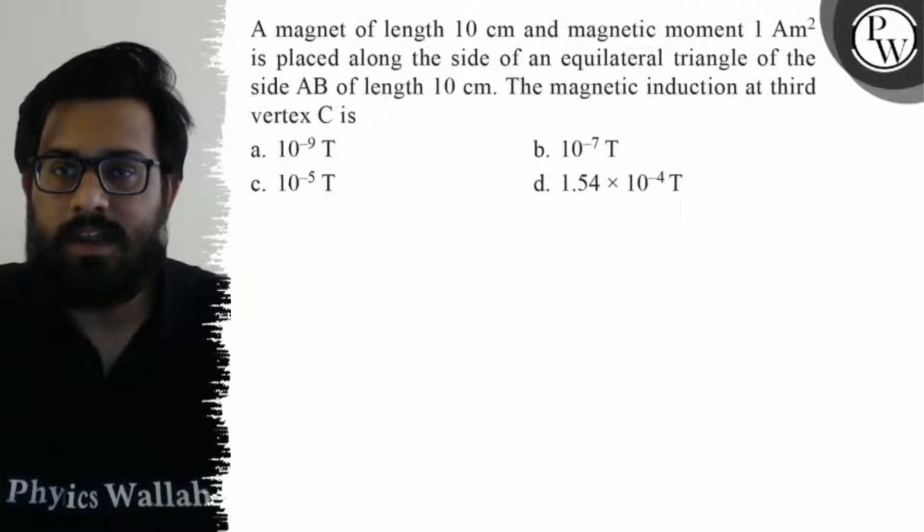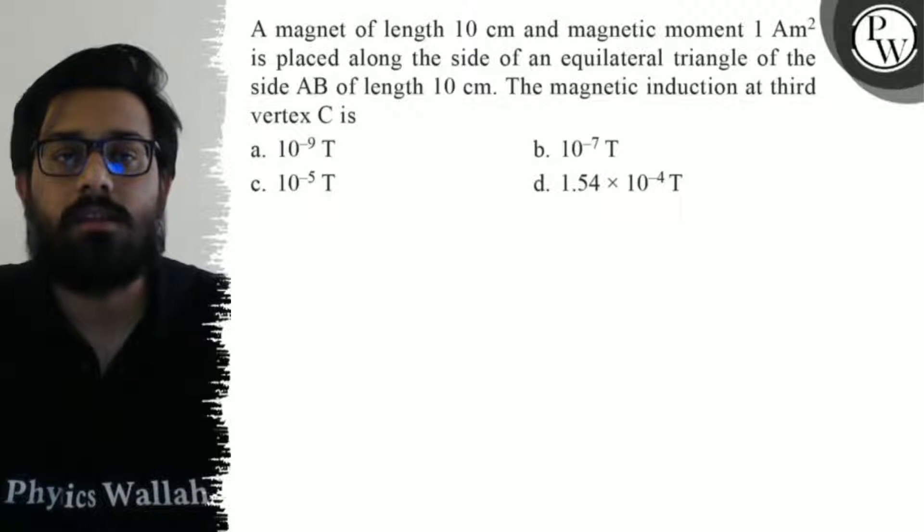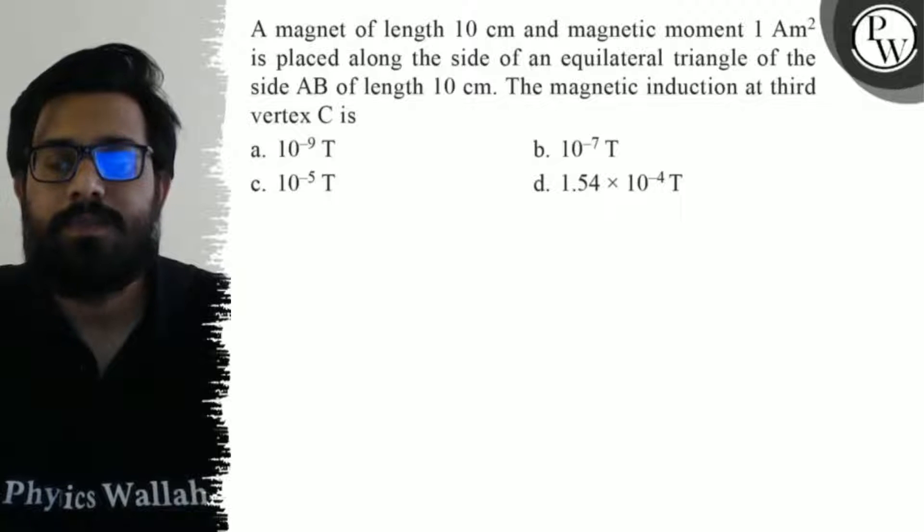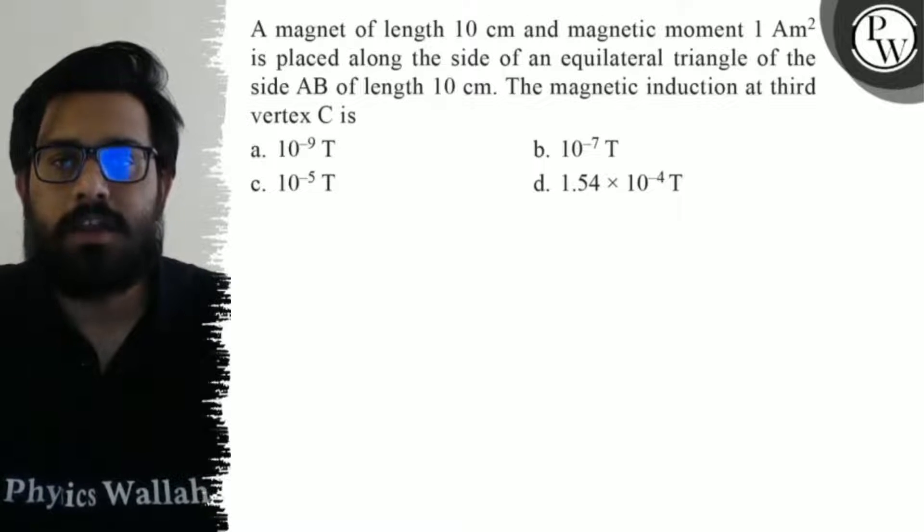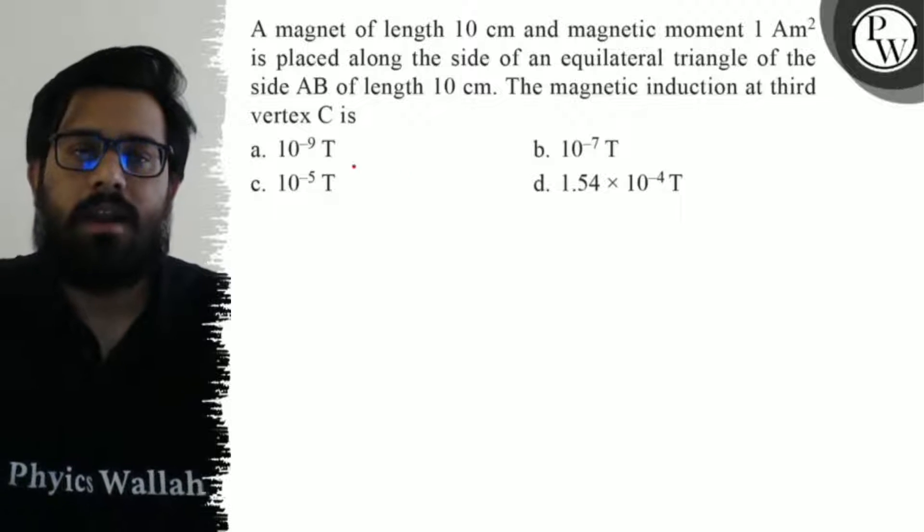Of side AB of length 10 centimeter. The magnetic induction at the third vertex C is: the first option is 10 to the power minus 9 tesla, second option is 10 to the power minus 7 tesla, third option is 10 to the power minus 5 tesla, and your fourth option is 1.54 into 10 to the power minus 4 tesla.